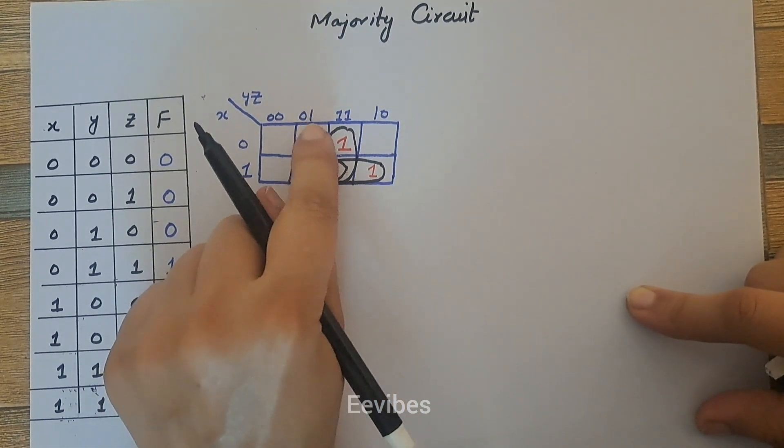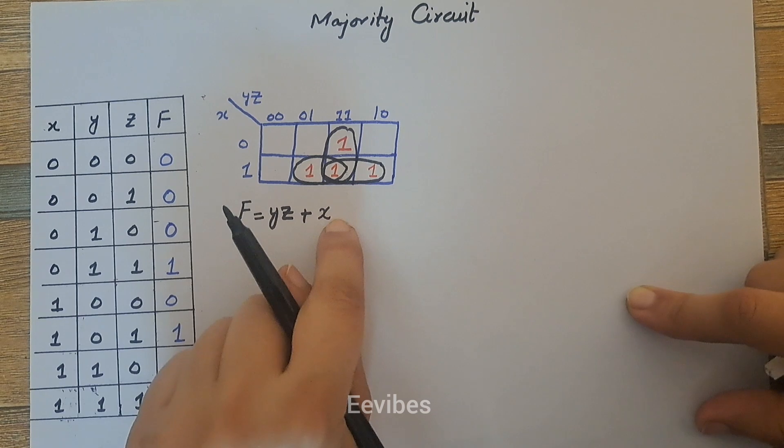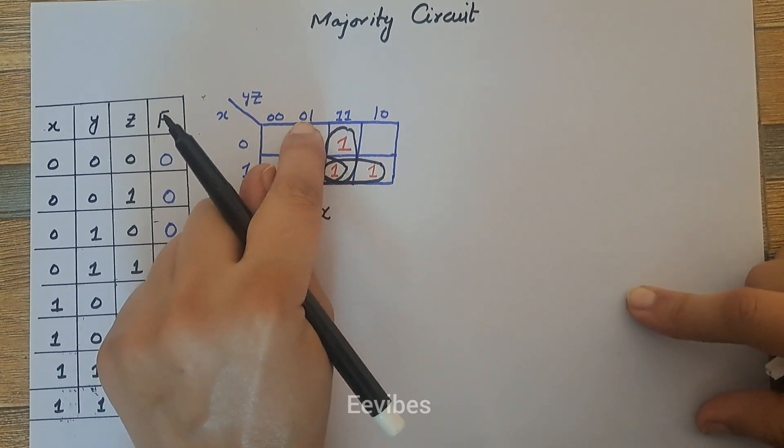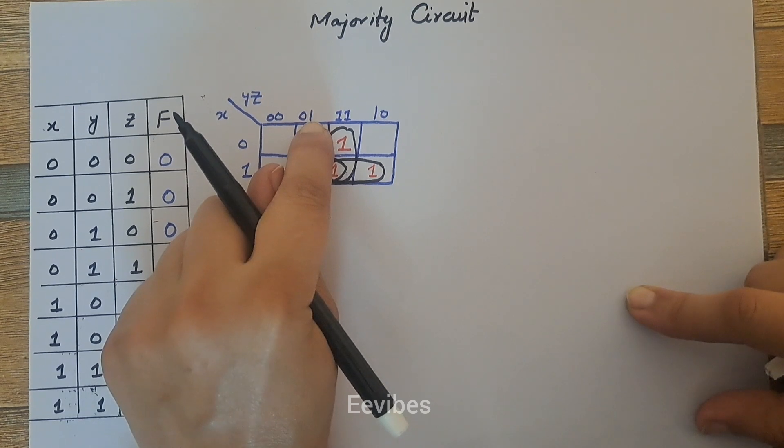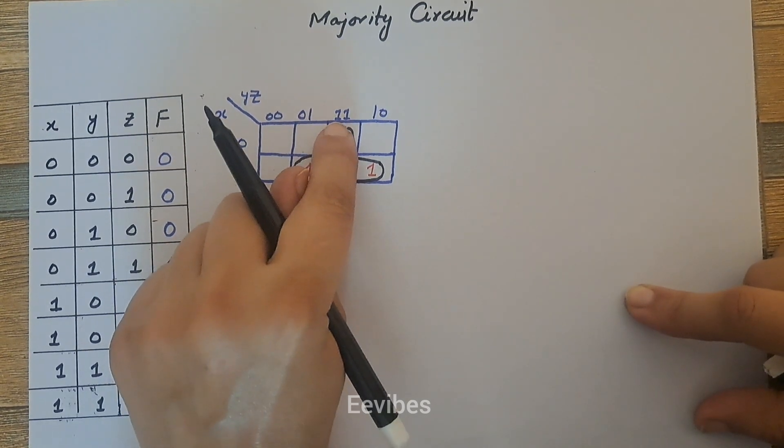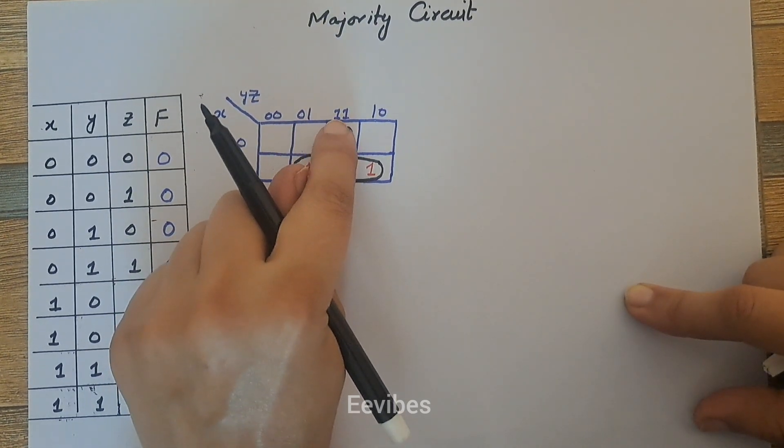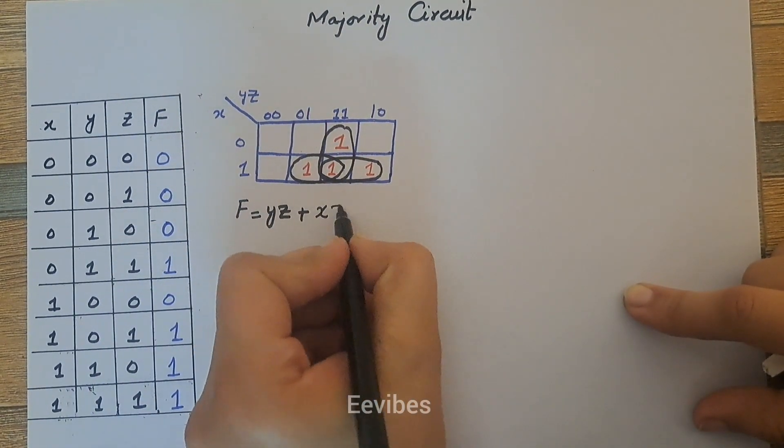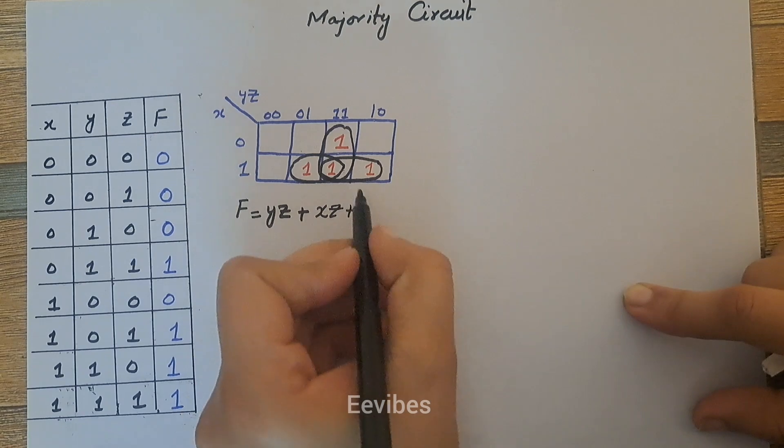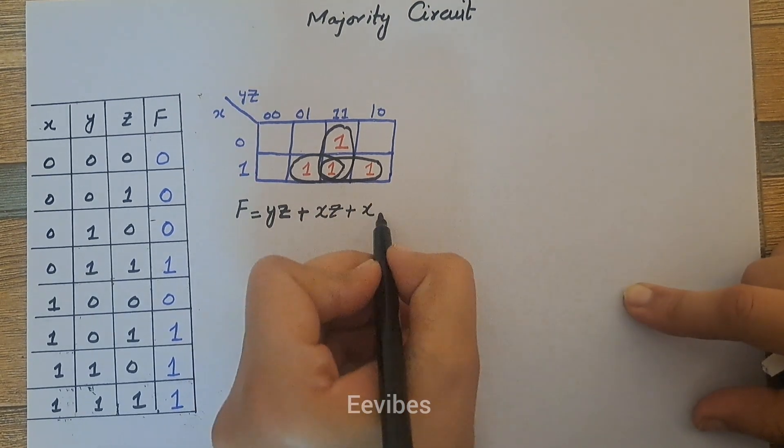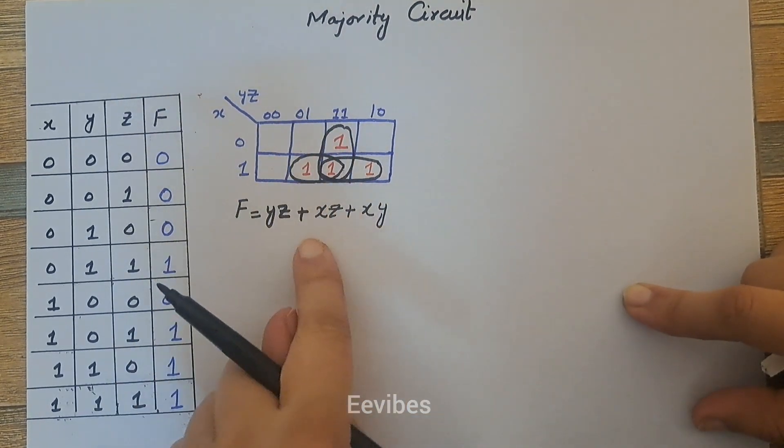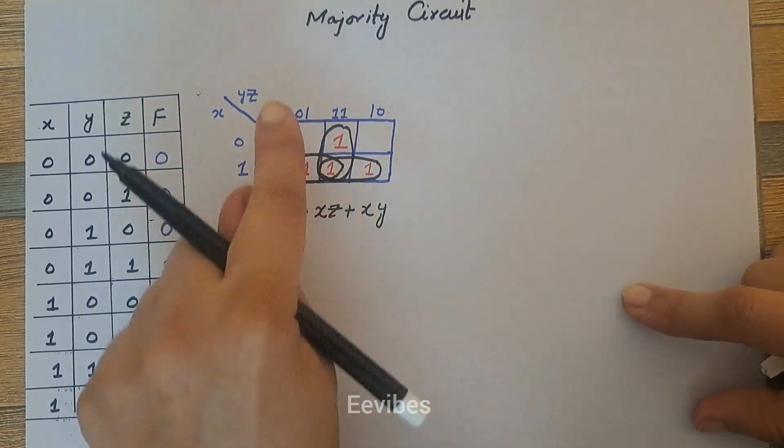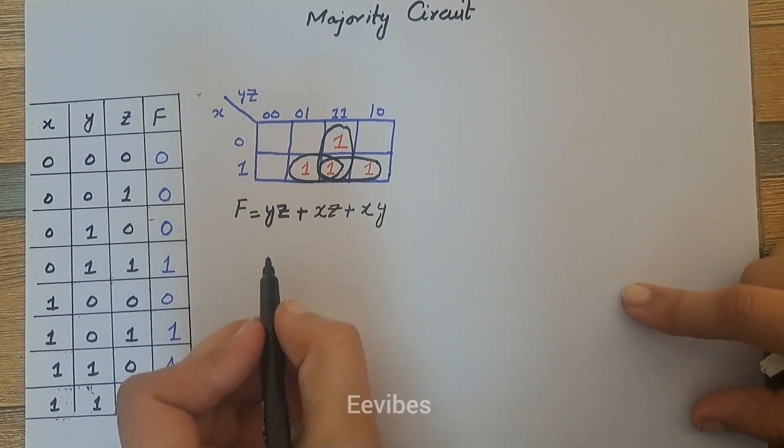Next I will consider these two terms. So here x is equal to one, so that's why x will appear as it is, while we have to write that variable which is not varying. So you can see this zero is actually corresponding to y while one is corresponding to z. Similarly, y is varying from zero to one, so we will not write it, while z remains as it is. So xz plus xy. So this is the final expression or the boolean expression for the majority circuit.